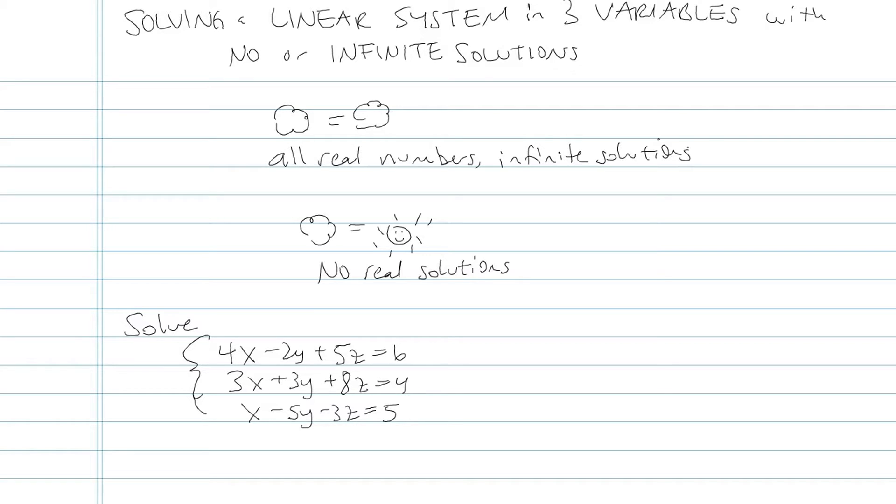Well, if you're doing the algebra and your variables eliminate, and you're left with something equals itself. I'm calling it cloud equals cloud, like 5 equals 5 or 10 equals 10. 10 equals 10 is always true. That's all real numbers, infinite solutions. It's not any old solution, but there are infinitely many points that are x, y, z coordinate solutions to this problem.